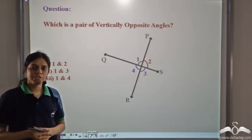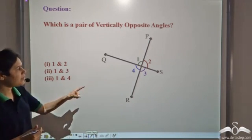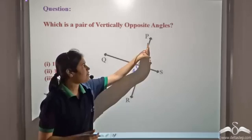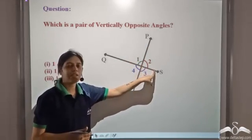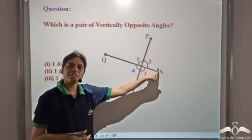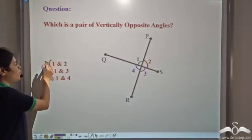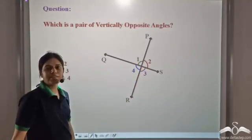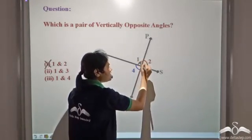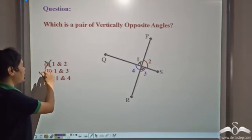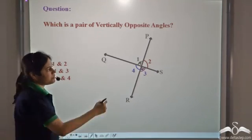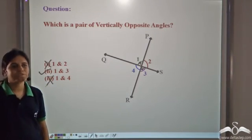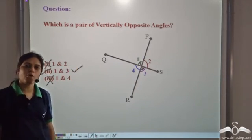Now which is a pair of vertically opposite angles? One and two — if you see, one and two are adjacent angles. They have a common arm and the non-common arm lies on the opposite side, and they have a common vertex, so they are adjacent angles and hence not vertically opposite. One and three are on the same vertex and on the opposite sides, so one and three are vertically opposite angles. One and four are also adjacent angles, so they are not vertically opposite. So angle one and three are vertically opposite angles.